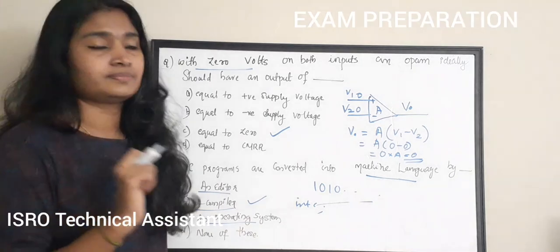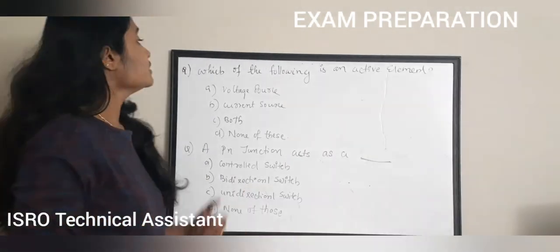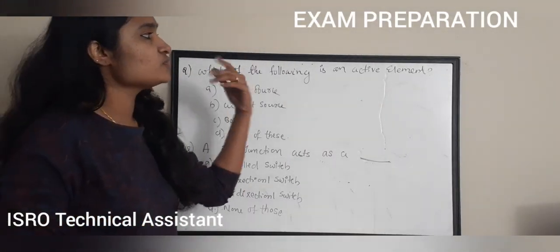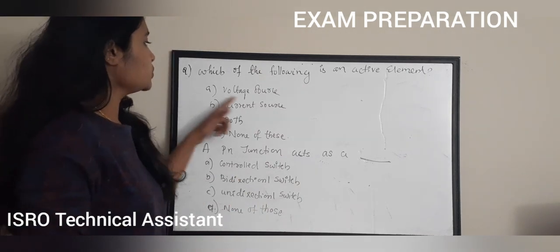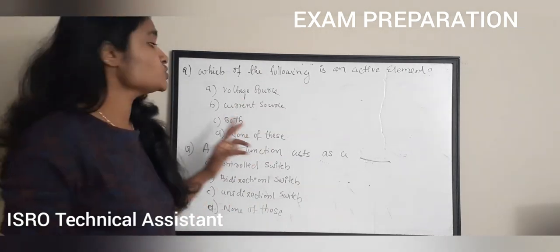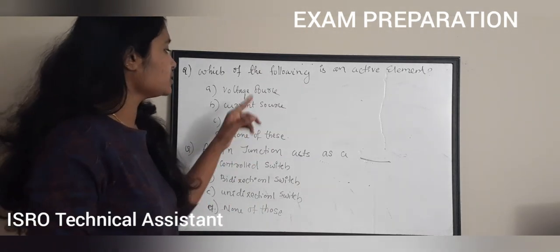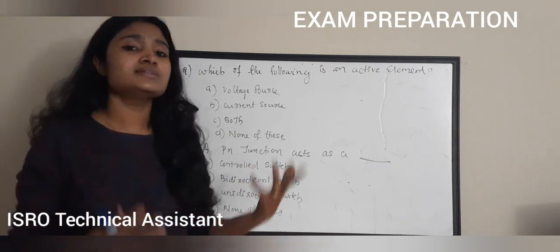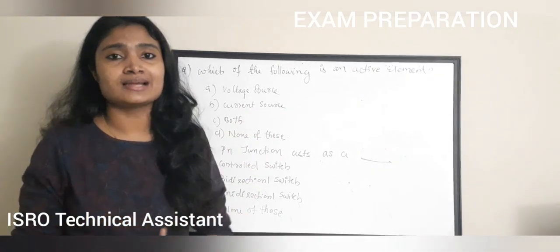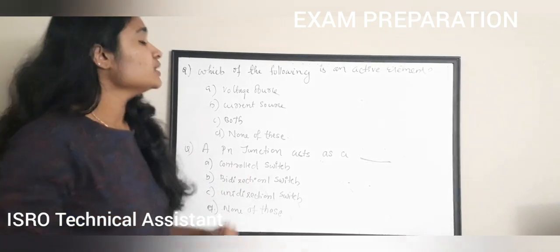The next question: which of the following is an active element? Option A: voltage source. Option B: current source. Option C: both. Option D: none of these. This question is from network analysis.